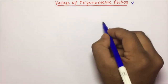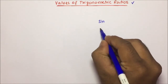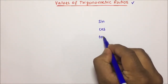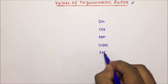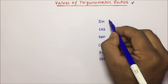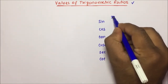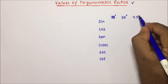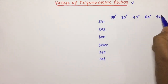So friends, what are the trigonometric ratios we have? We have sin, we have cos, we have tan, and then we have cosec, and then we have sec, and we have cot. And friends, the angles we have are 0 degree, 30 degree, 45 degree, 60 degree, and 90 degree.